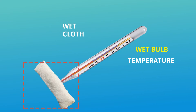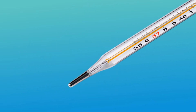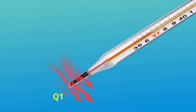This temperature, considering the wet bulb, is called wet bulb temperature. At normal conditions, dry air passes through this bulb and the bulb takes heat from the air — say it is Q1 amount of heat — and mercury expands due to this heat, giving a reading of 41 degrees centigrade.